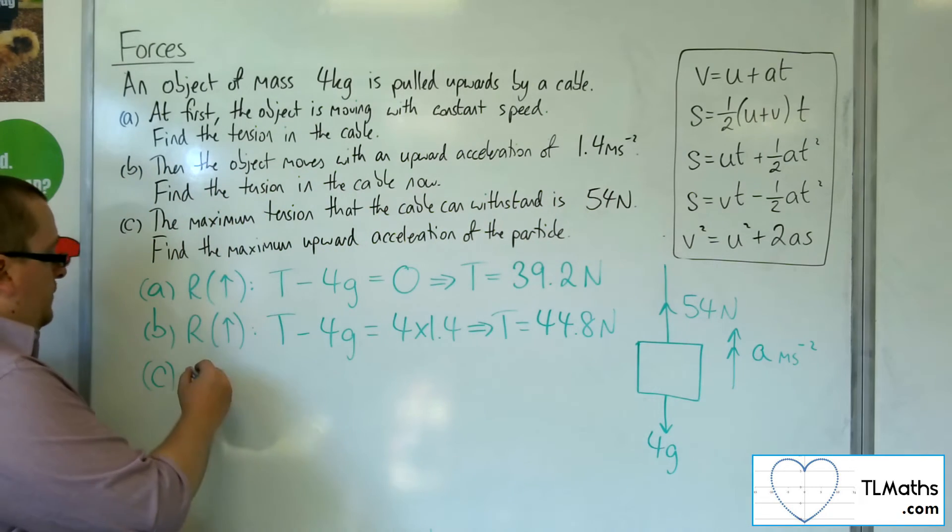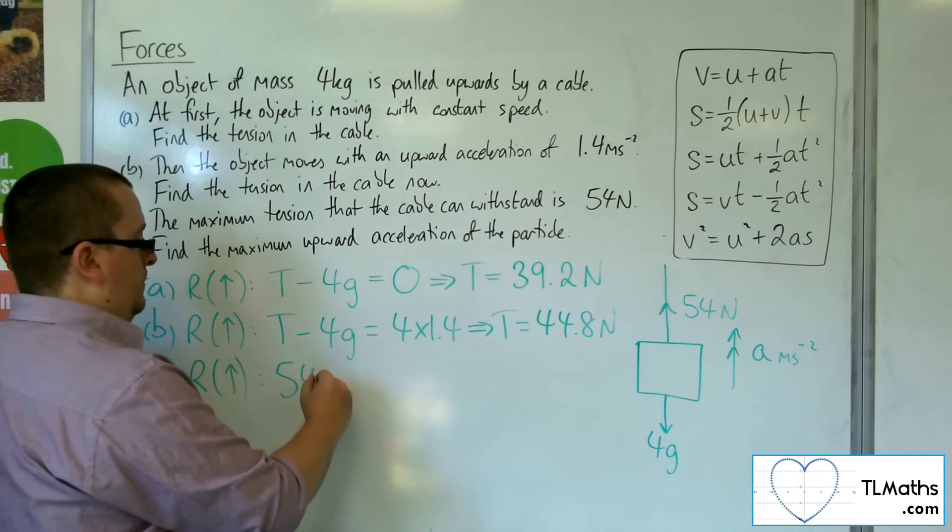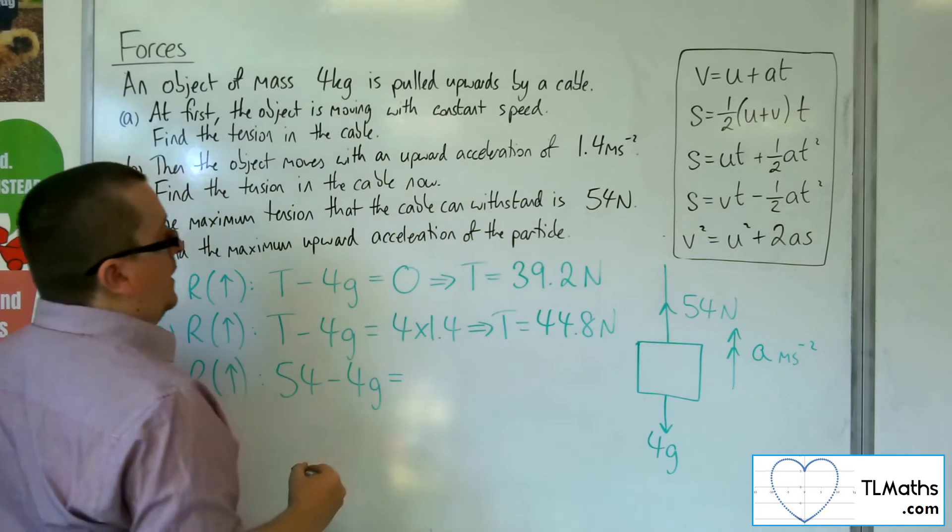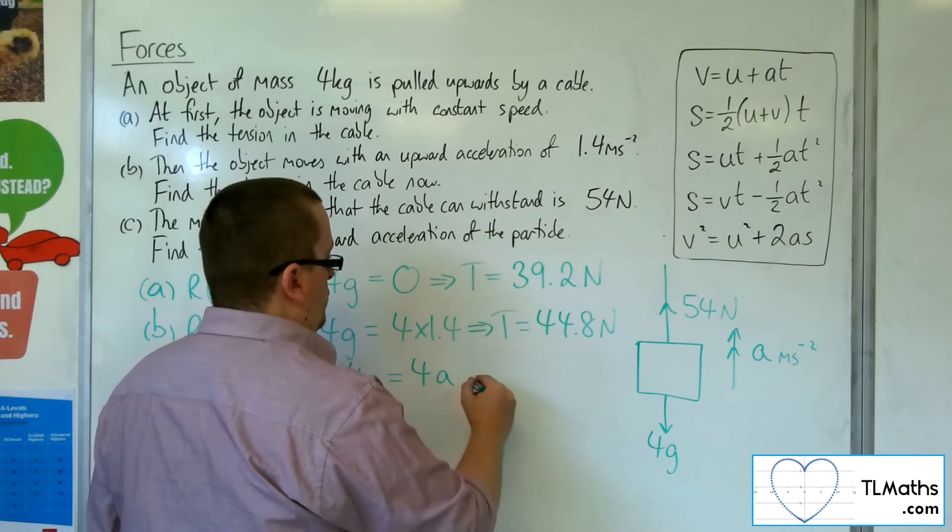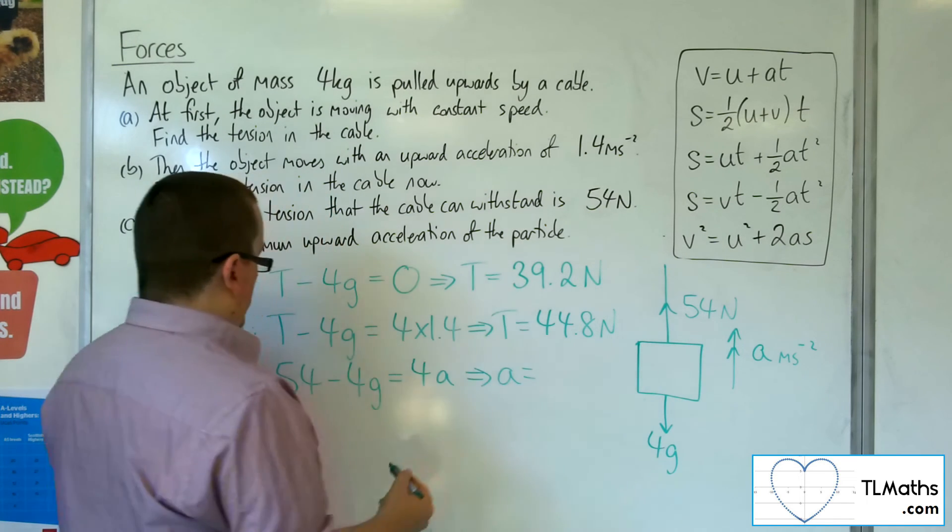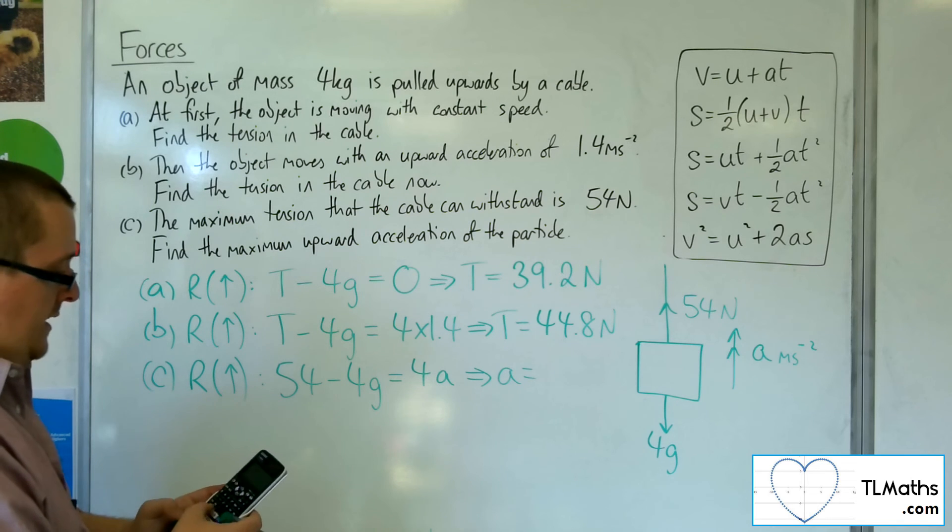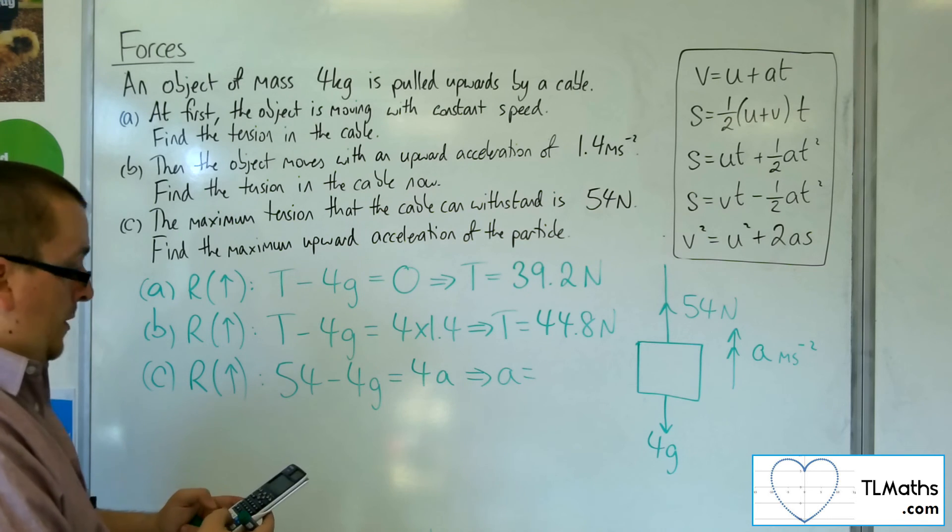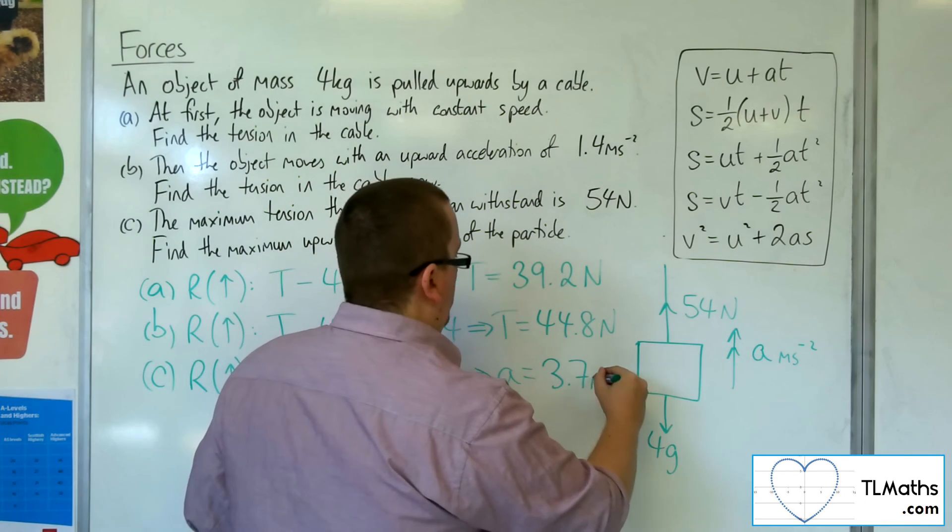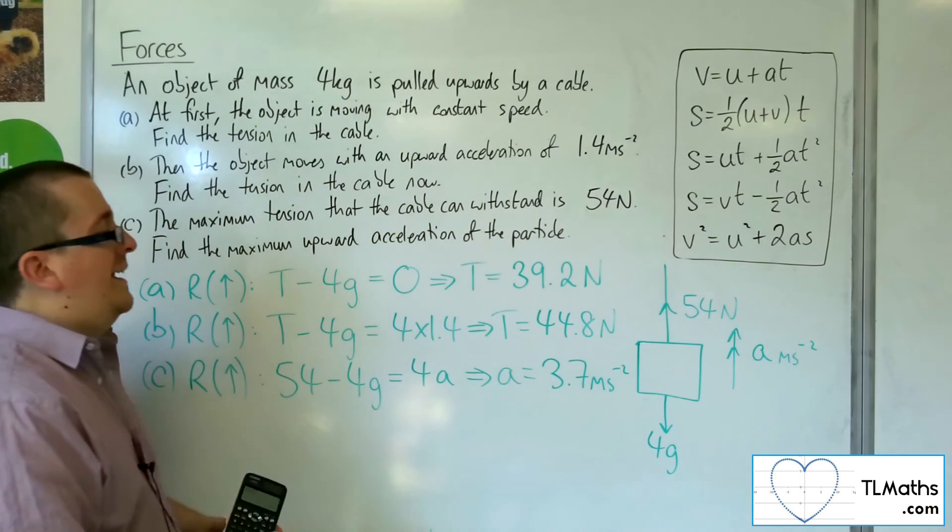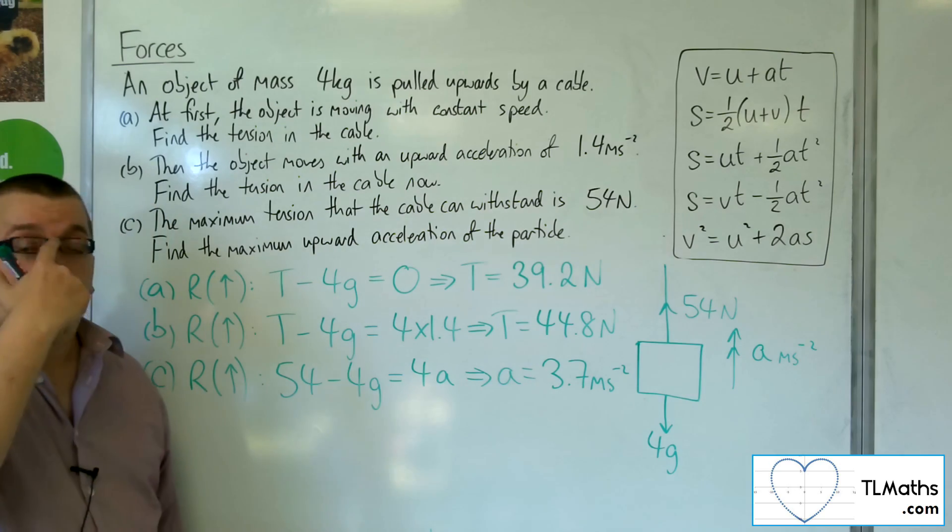So if I resolve upwards again, I've got 54, take away 4g, is equal to the mass, 4, times the acceleration, a. So 54, take away 4 lots of 9.8, and then divide that by 4, and we get 3.7. So 3.7 metres per second per second is the fastest the acceleration can be before the cable breaks.